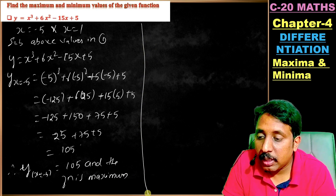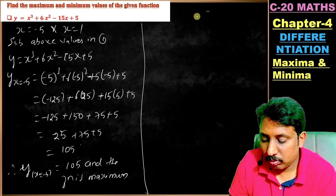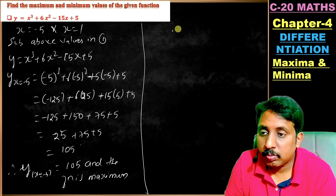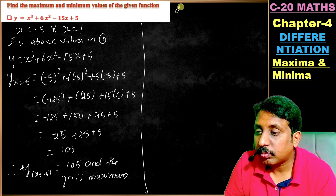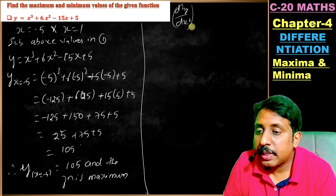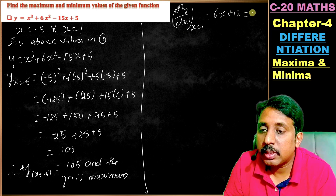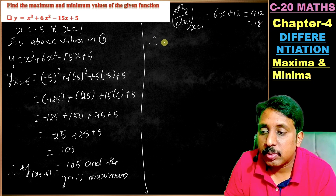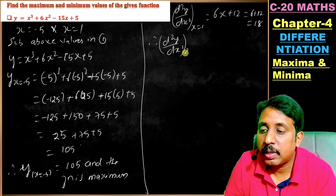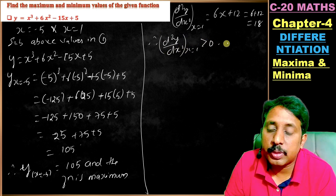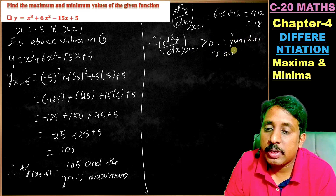Similarly, substitute x = 1 into d²y/dx² = 6x + 12: that gives 6(1) + 12 = 18. So d²y/dx² at x = 1 is 18, which is greater than 0. Therefore the function is minimum at x = 1.